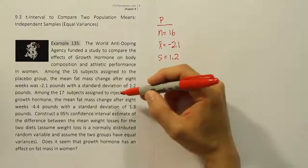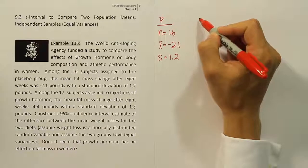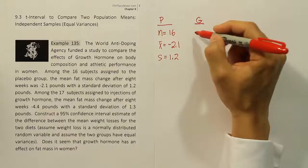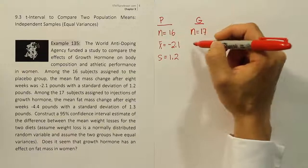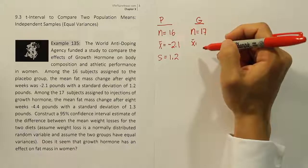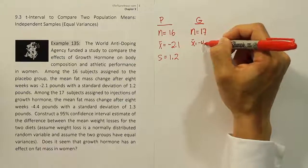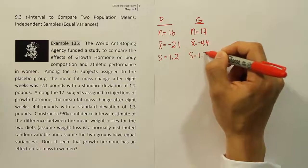And then it says among the 17 subjects assigned to injections of growth hormone. So we'll call this the G group, the growth hormone group, and the n for that group is 17. The sample mean for that group is negative 4.4 pounds. And the standard deviation is 1.3 pounds.